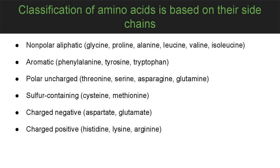Polar uncharged amino acids — meaning they can interact with water but carry no positive or negative charge — include threonine, serine, asparagine, and glutamine. Sulfur-containing amino acids include cysteine and methionine. Negatively charged amino acids include aspartate and glutamate. Positively charged amino acids include histidine, lysine, and arginine.